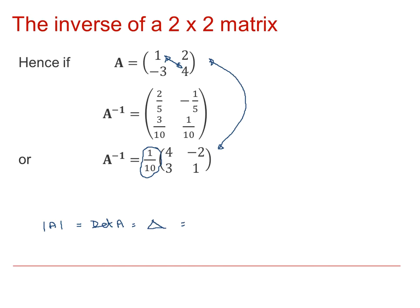And that comes from the product of the leading diagonal, which is 1 multiplied by 4, minus the product of the other diagonal, so minus the 2 multiplied by -3. And you'll see there you get 4 minus -6, which is 10. So, we've actually divided by the determinant of A.